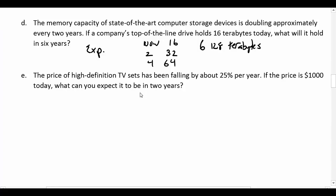E: The price of a high-definition television has been falling about 25% per year. If the price is $1,000 today, what do you expect it to be in two years? Okay, so we've got a decay. It's by a percent, so this is definitely an exponential.